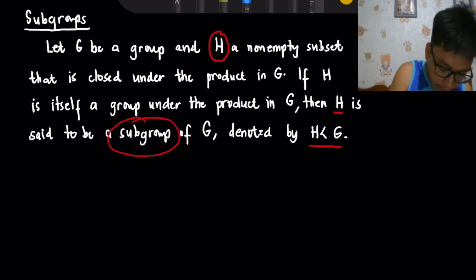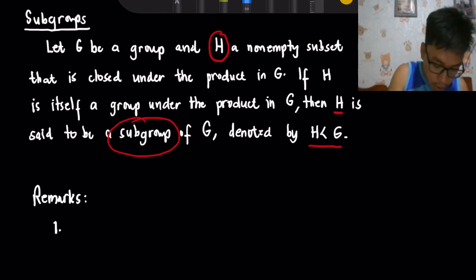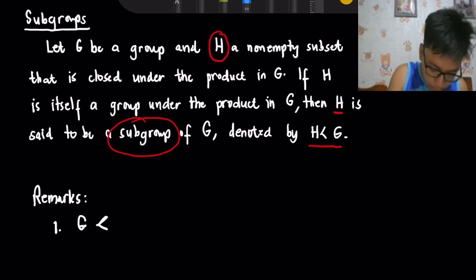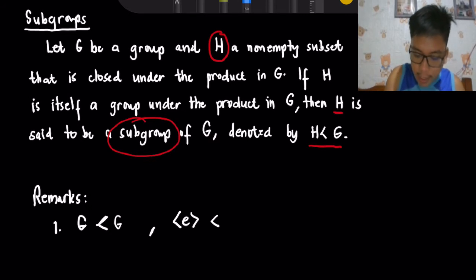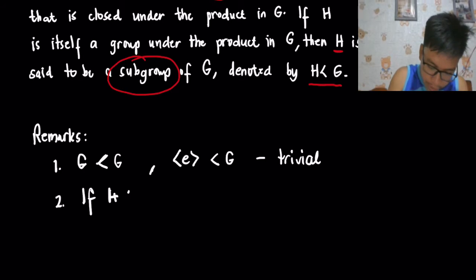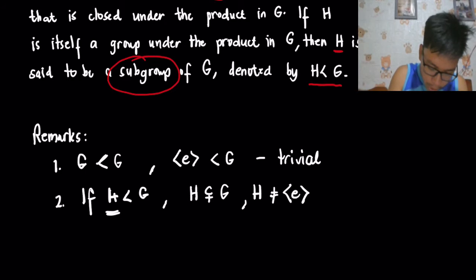By this definition, we clearly have the following remarks. Number one: since a set is a subset of itself, for a given group G, G is a subgroup of itself. Also, the identity element forms a trivial subgroup of G. Number two: if H is a subgroup of G, and H is not equal to G and not equal to just the identity, then we call H a proper subgroup.